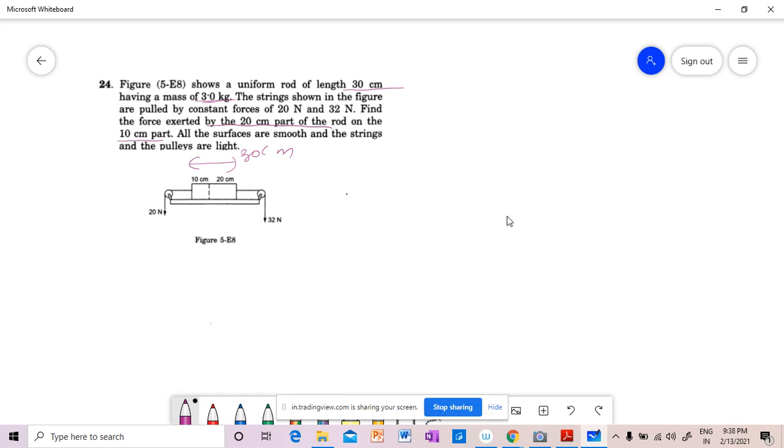देखिए, सबसे पहले इसका acceleration निकाल लेते हैं। यह 32 newton नीचे की तरफ है, but मैं इसे इस तरह से भी draw कर सकता हूँ, answer में कोई फर्क नहीं पड़ेगी। तो यह वाला part इस्ट्रेट कर दिया, यह वाला part भी स्ट्रेट कर दिया। अब आप देखें एक system है, right side में 32 newton का force लग रहा है, left side में 20 newton का force लग रहा है, और इसका mass already given है.